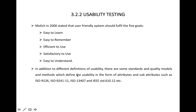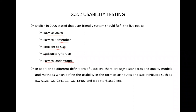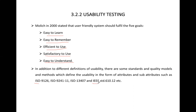According to Maulish, there are five different goals of usability: easy to learn, easy to remember (memorability), efficient to use, satisfactory to use, and easy to understand. International bodies have also set standards for usability. ISO standards include ISO 9126, ISO 9241-11, and ISO 13407. The IEEE standard is 610.12.